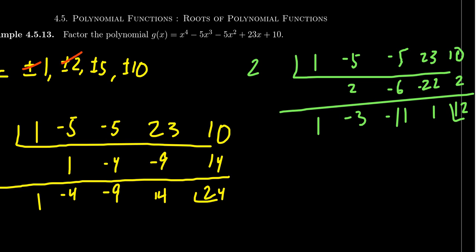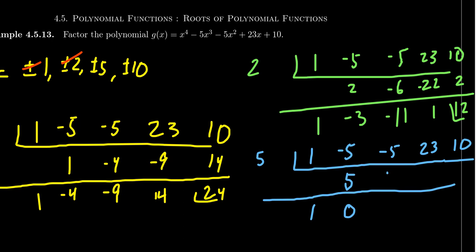Keep on going. Have an optimistic point of view here. Let's try 5. Again, we're just going down the list here. With this technique, there is a lot of trial and error. We're just kind of guessing the route and going from there. Bring down the 1. 1 times 5 is 5. -5 is 0. Times 5 is 0. -5 is -5. Times 5 is -25. Plus 23 is -2. Times 5 is -10. And woohoo, we did it. We found a root. 0 is the remainder there.